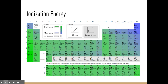Those are all of the major periodic trends. We've talked about how the periodic table was developed, reviewed the properties of chemical families, and looked at the three major periodic trends you need to know and understand. Thanks for watching.